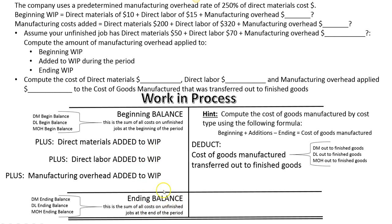Whatever is left over will be your ending balance. In your beginning balance, you're going to have some direct materials costs, some direct labor costs, and manufacturing overhead applied costs. Then during the period, you're going to add direct materials, add direct labor, and you're going to apply more overhead based on these new costs that you've added. All of that represents the costs that were in process during the period and are available to be completed.